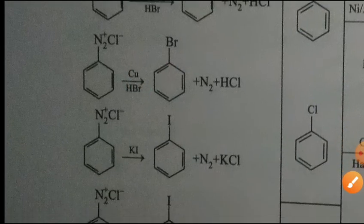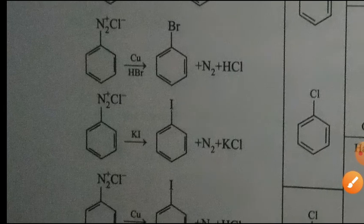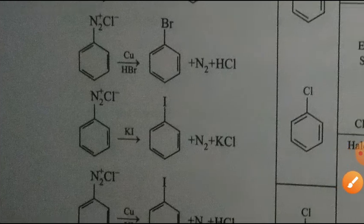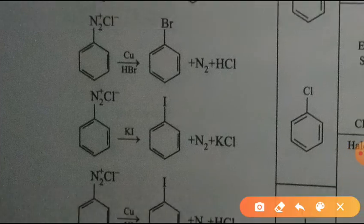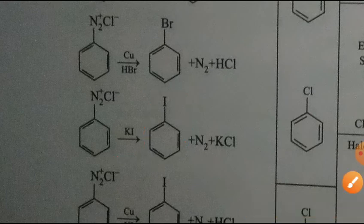From diazonium chloride, reacting with KI will give iodobenzene. So from diazonium chloride you can make fluorobenzene, chlorobenzene, bromobenzene, and iodobenzene.